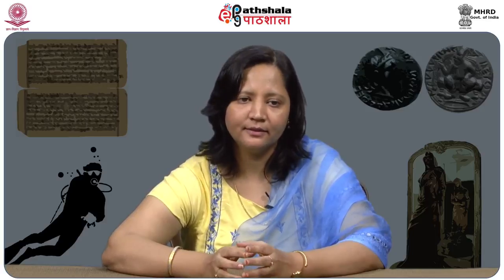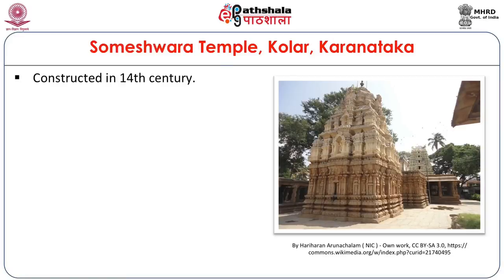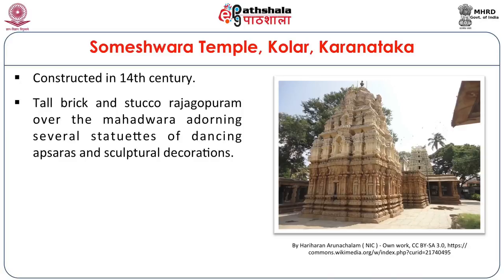We will now go through the newly constructed temples, the additions made to existing temples, and the various forts constructed by various chiefs of the empire elsewhere than Hampi. Let's begin with the Someshwara Temple at Kolar in Karnataka, constructed in the 14th century. This is a tall brick and stucco Rajagopuram above the Mahadwara, adorned with several statues of dancing apsaras and sculptural decorations.